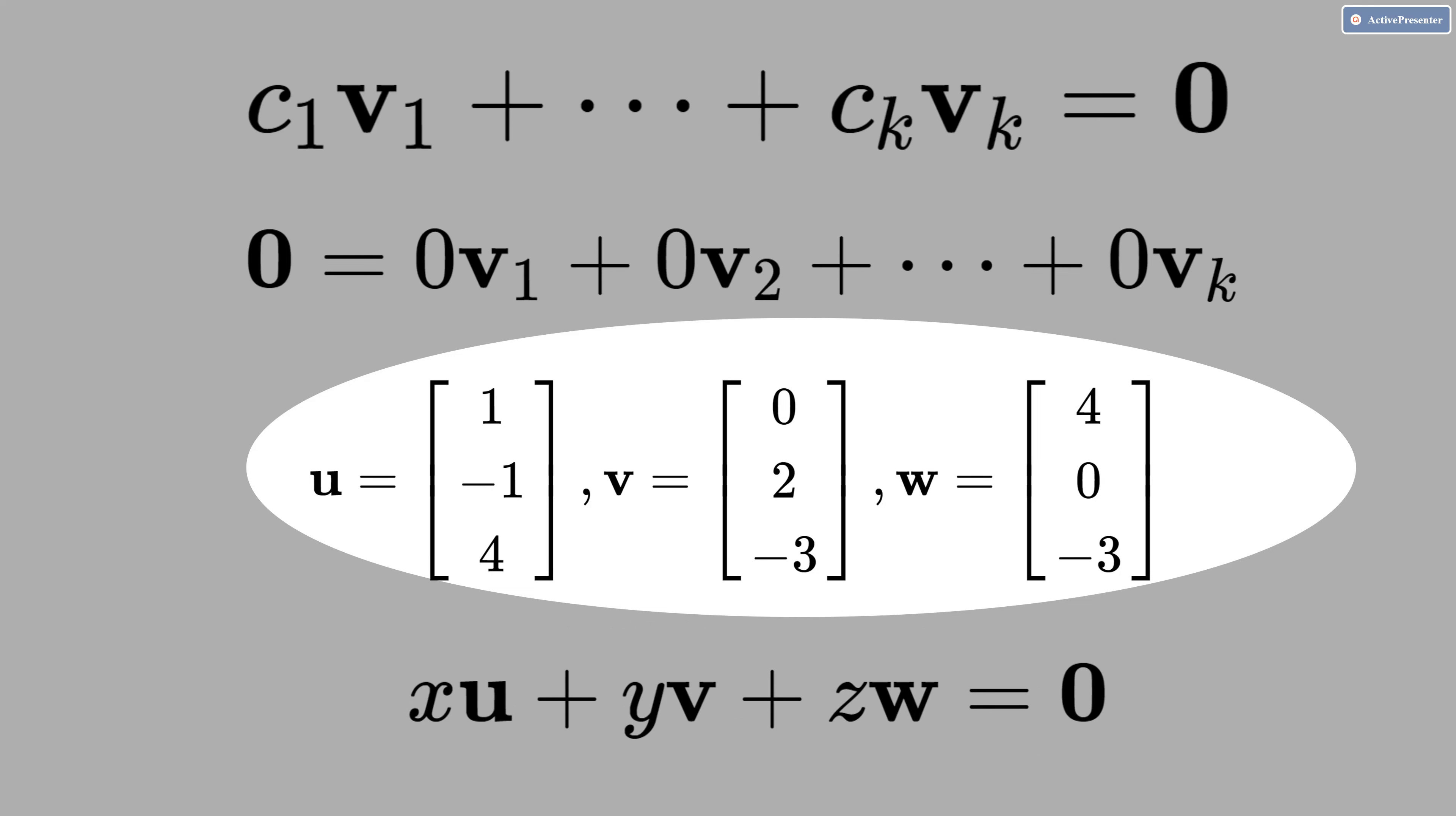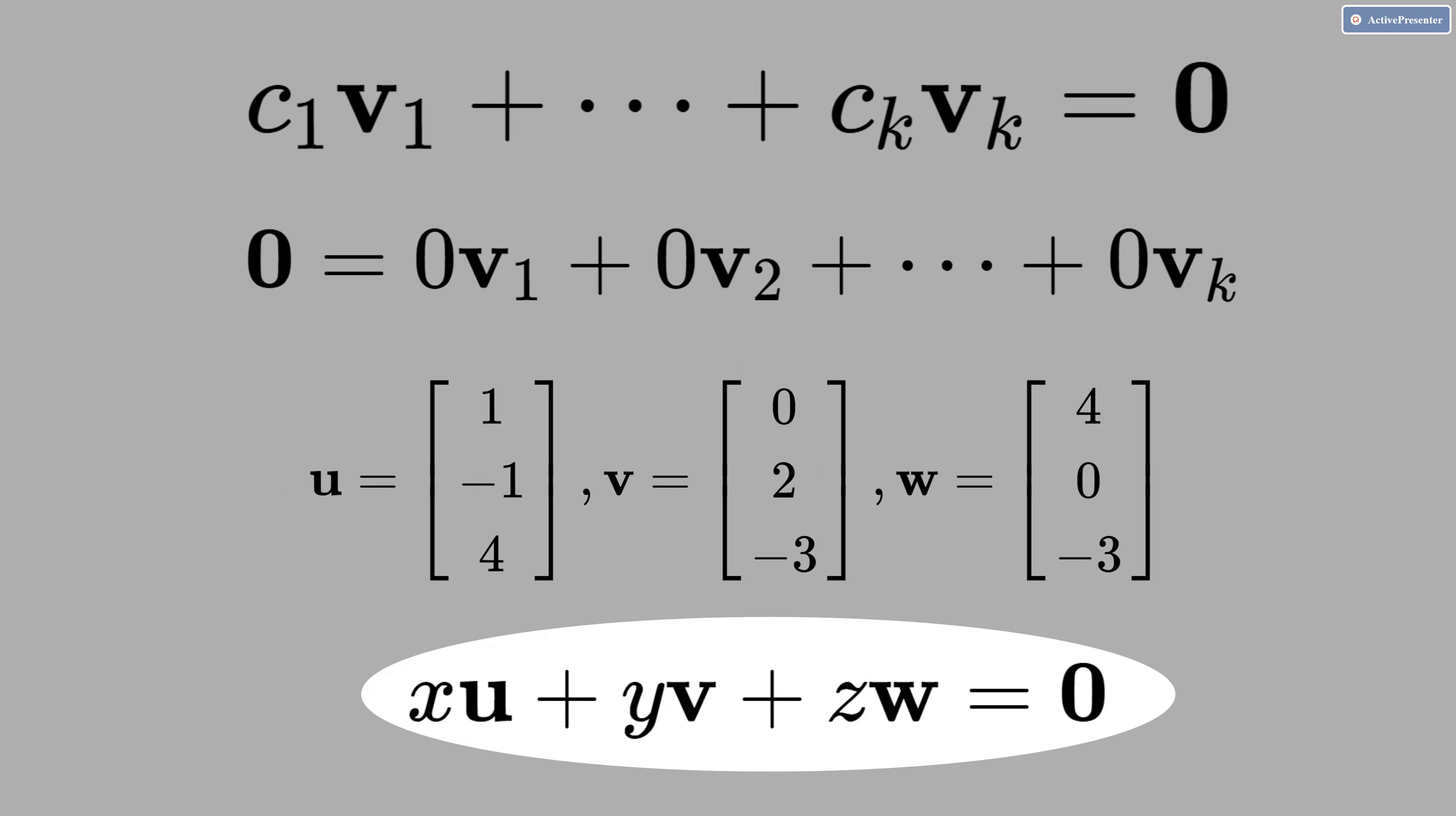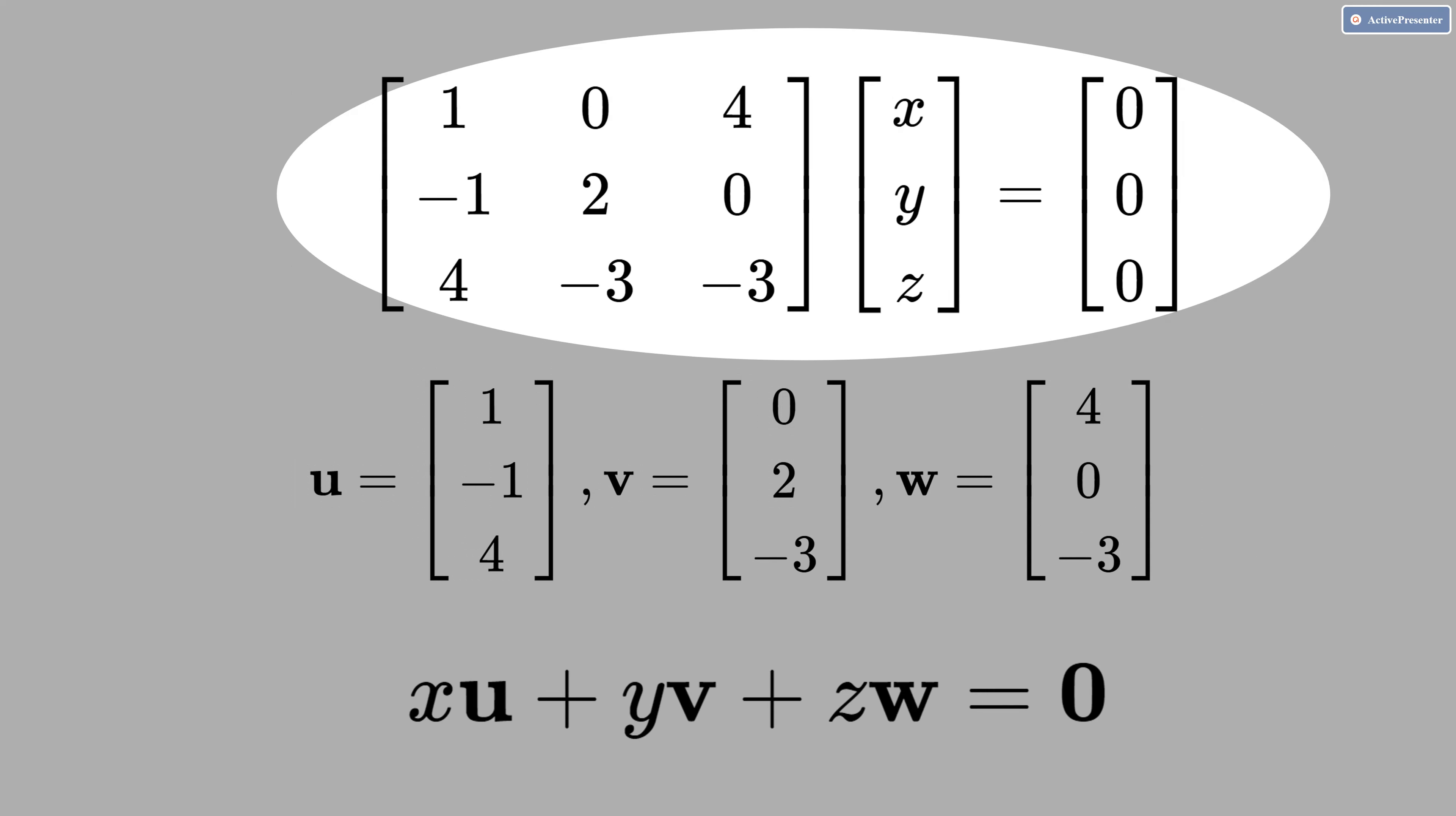u, v and w, they are given. Therefore, our job now is to determine if they are independent or if they are dependent. This vector equation is equivalent to this matrix equation.